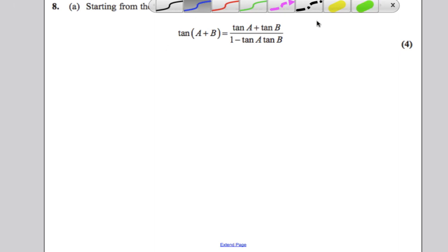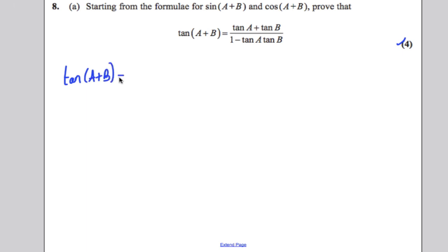Firstly, the first thing to write to get yourself two of these easy four marks: tan of A plus B, by its very definition, must be sine of A plus B divided by cosine of A plus B. It must be true of that.